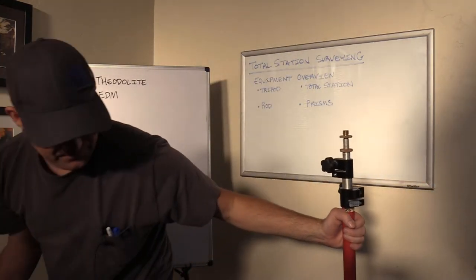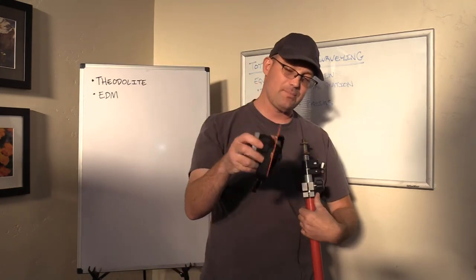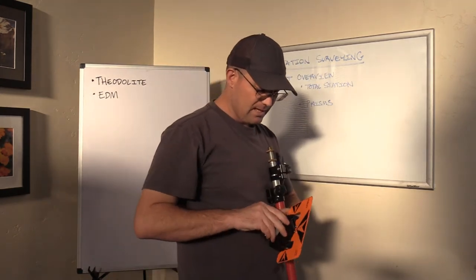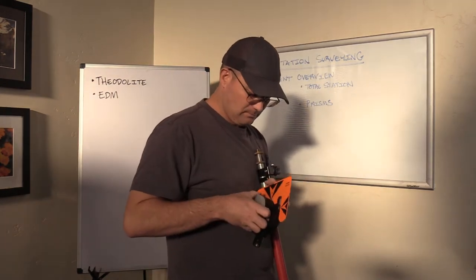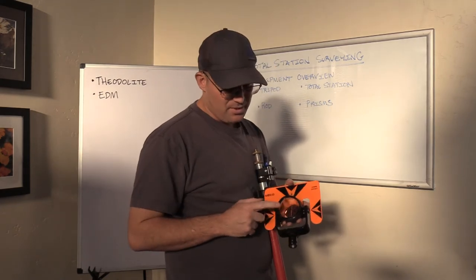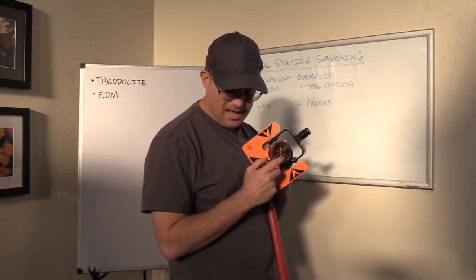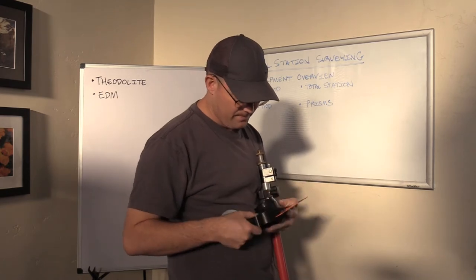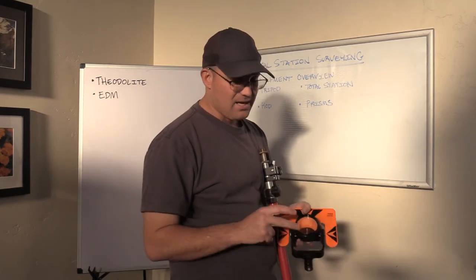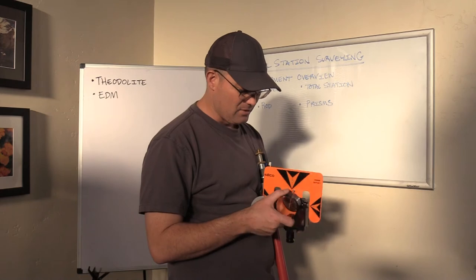Here's what a prism looks like. This is what we call a regular 30 millimeter prism. It's got a cap on it. Here's the prism, the actual prism. It's actually made out of glass. It's a glass prism. And it's actually shaped like a prism, believe it or not.